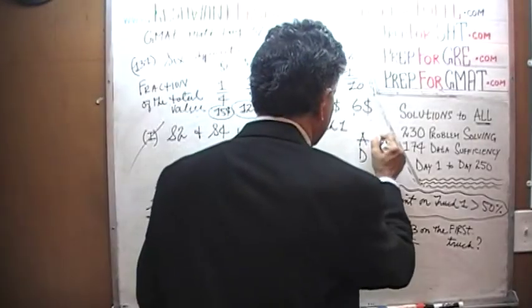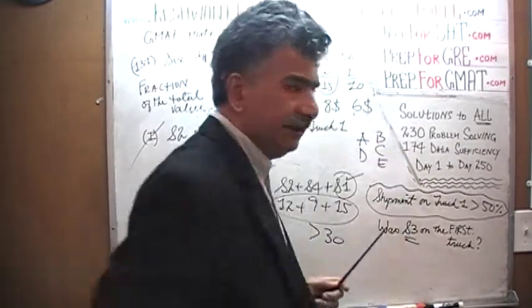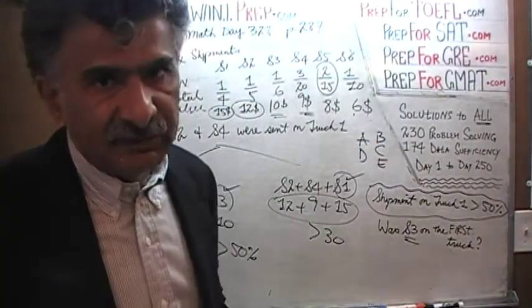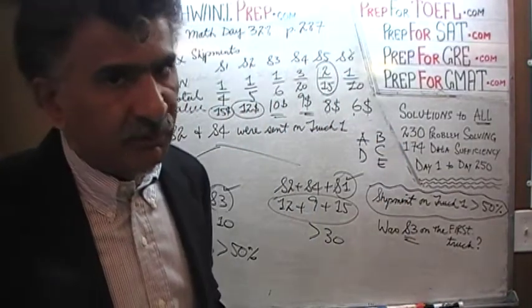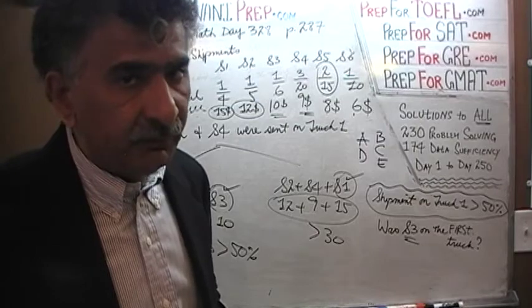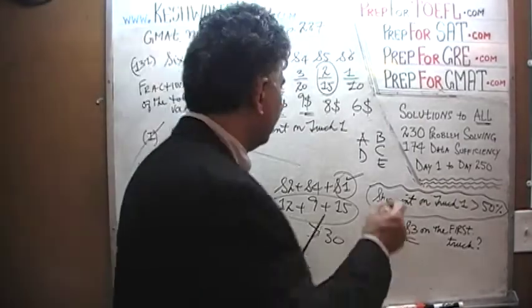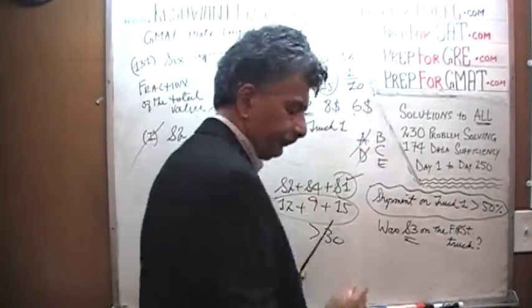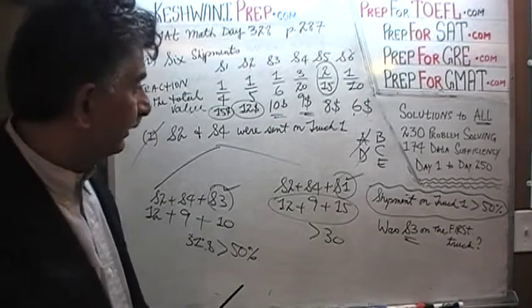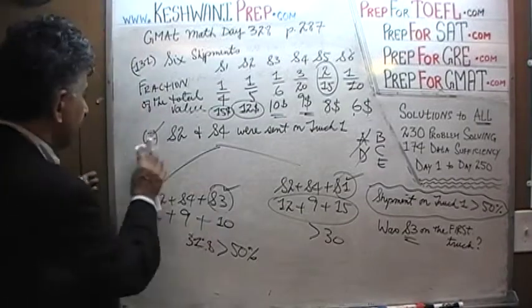The answer choices for data sufficiency are A, D, B, C, E. Now that we've established that statement 1 by itself is not enough, the answer cannot be A or D — it would have to be either B, C, or E. Let's look at the 2nd statement.